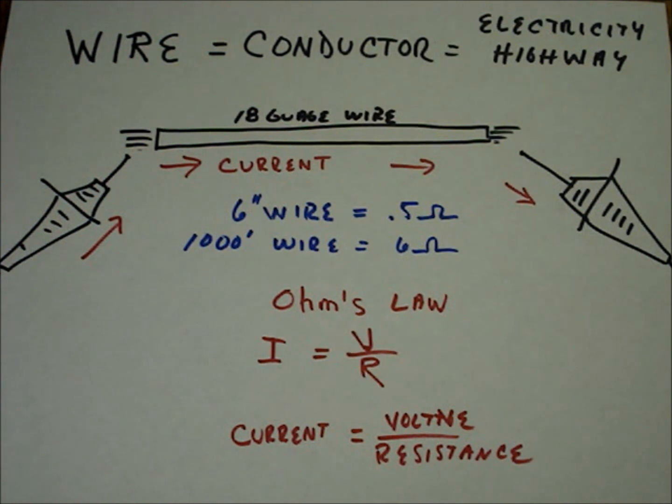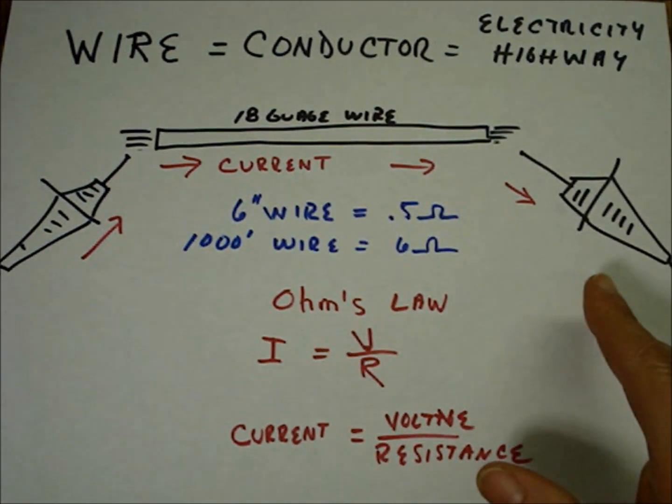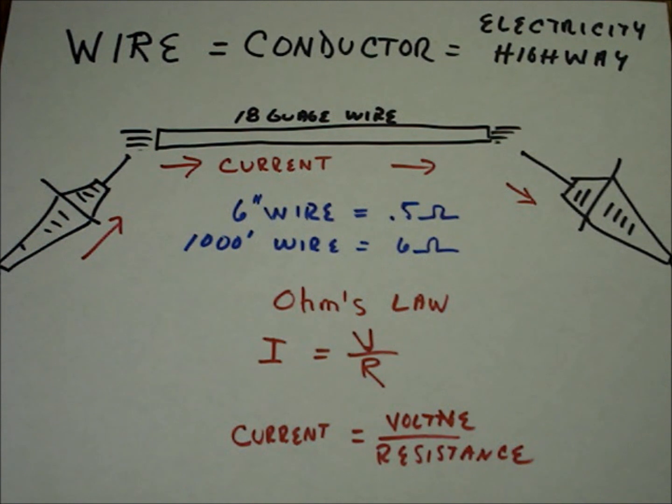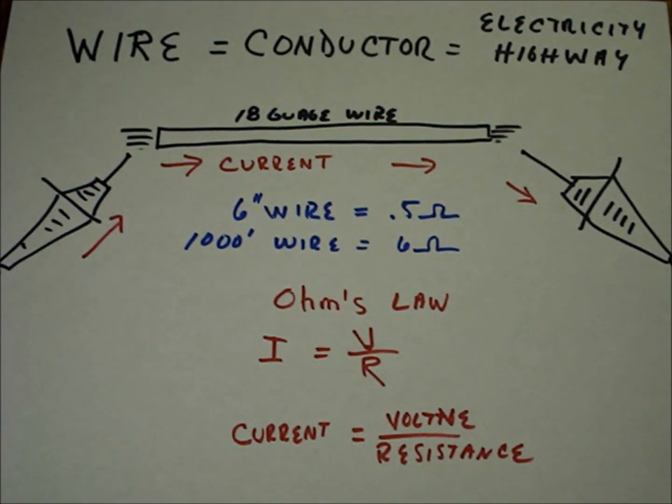Wire is a conductor. It's sort of a highway for electricity. The multimeter sends current through the wire and it senses voltage changes. Using the voltage, it uses Ohm's law to calculate the amount of resistance in the circuit. When measuring point to point on a conductor with a multimeter, it's usually called checking continuity.